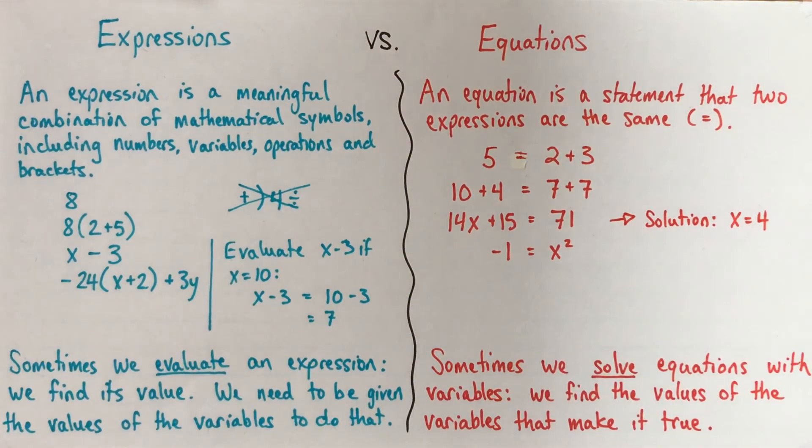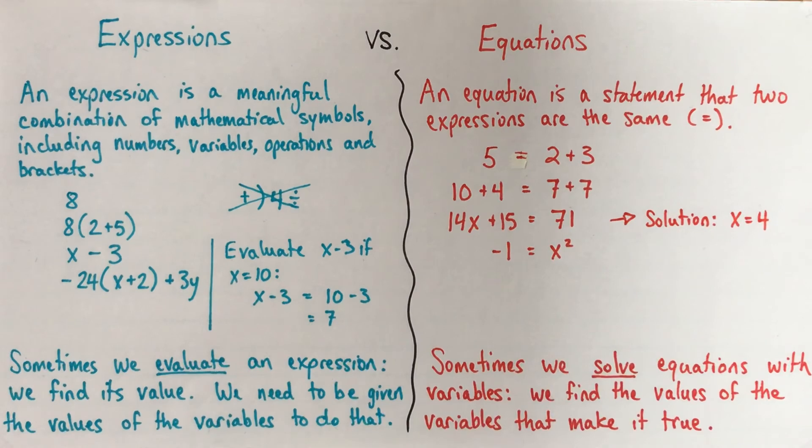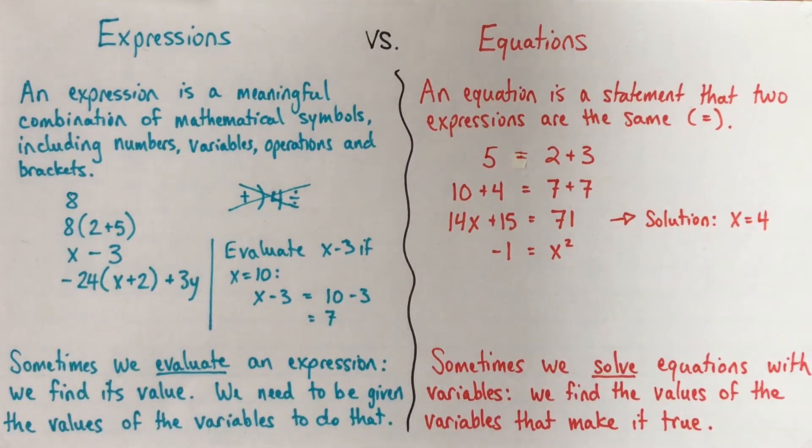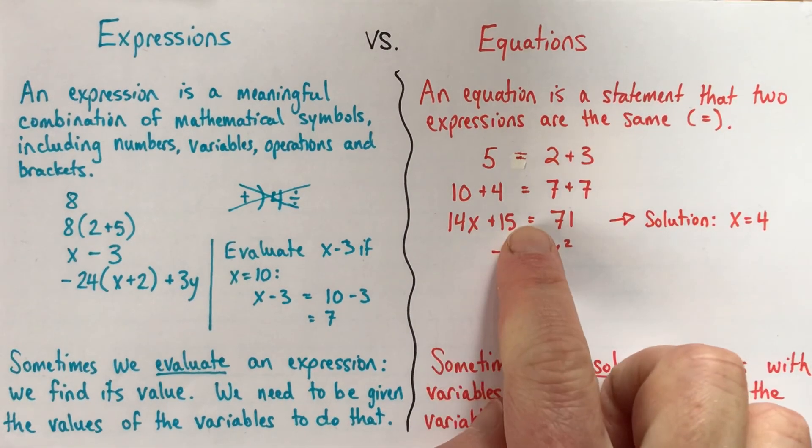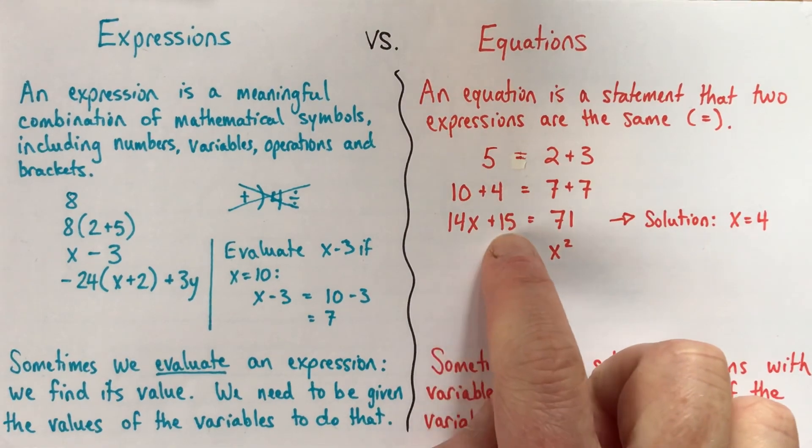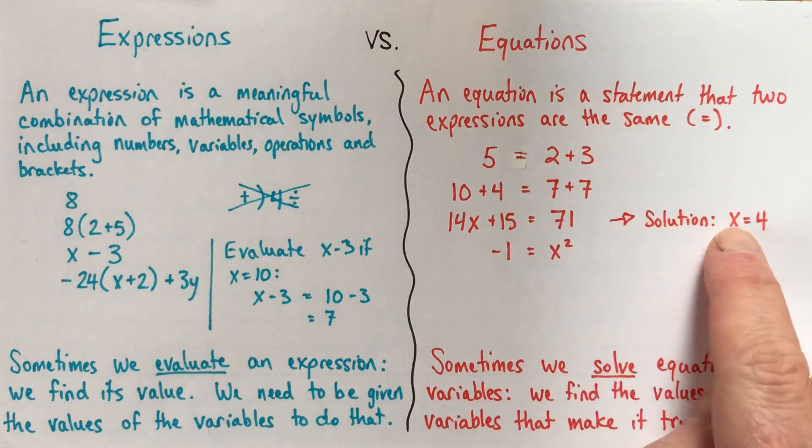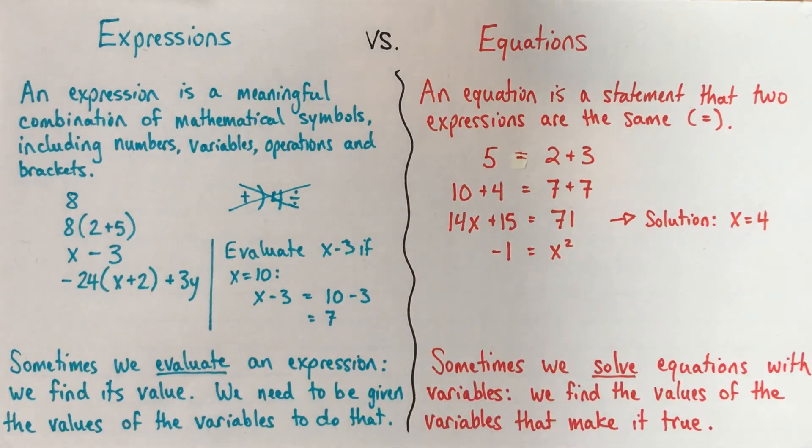So a common place that people get mixed up is just between the evaluating and the solving. If you don't have something with an equal sign in it, you can't tell us what the value of the variable is. It's impossible. It could be anything. If you do have something with an equal sign in it, and it has variables, then there's a good chance you may well be able to solve it, and to tell us what the value or values of the variables are that make it true. All right.